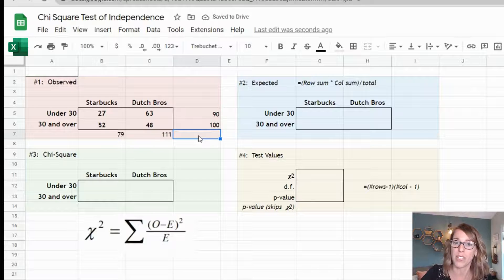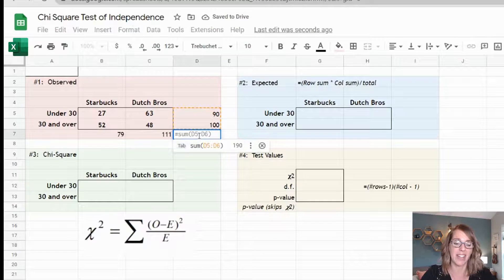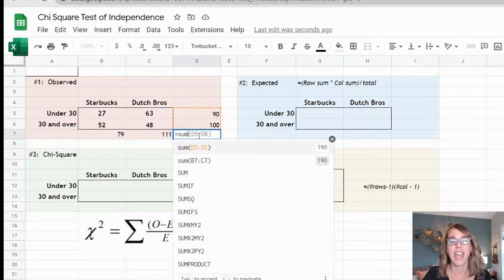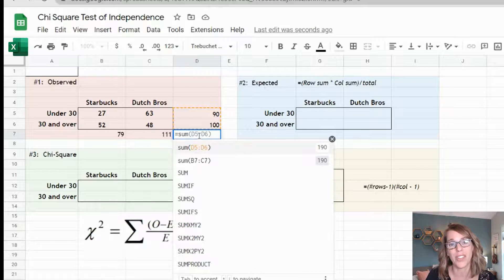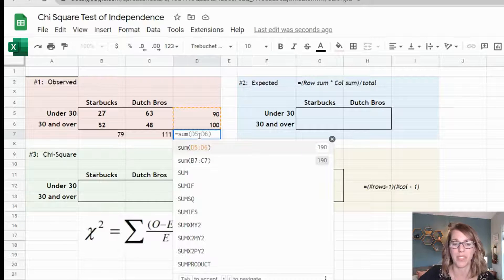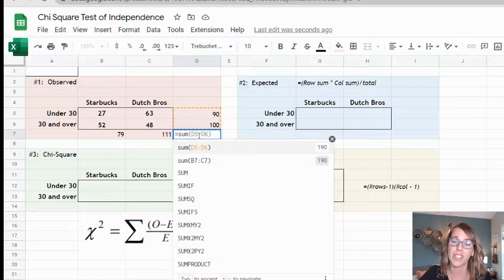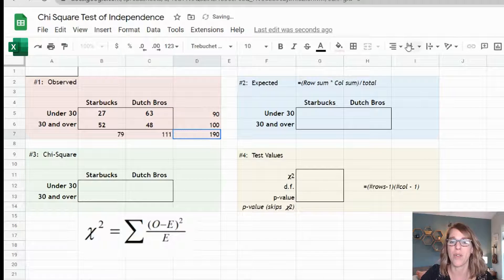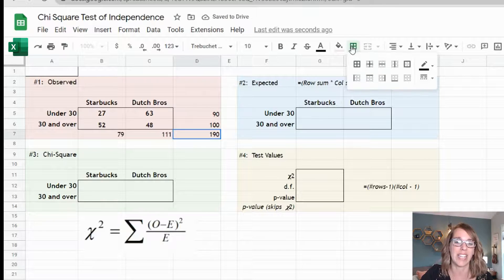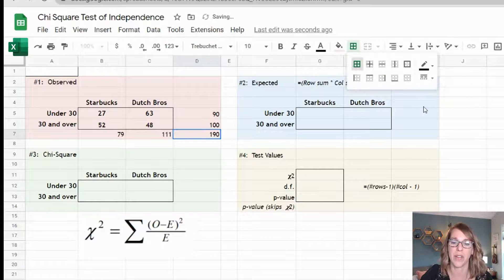Finally I want an overall sum for my table. I'm going to add sum. I could add the two numbers above or the two column sums. I would end up with the same value. Now it guessed what I wanted and that's exactly what I want. I can just hit enter and I've got my overall total of 190. I'm going to put a border around that one.